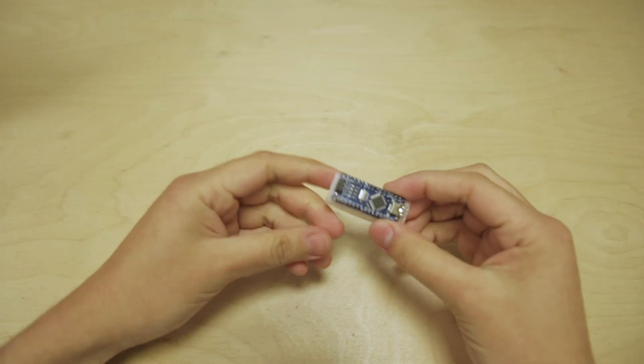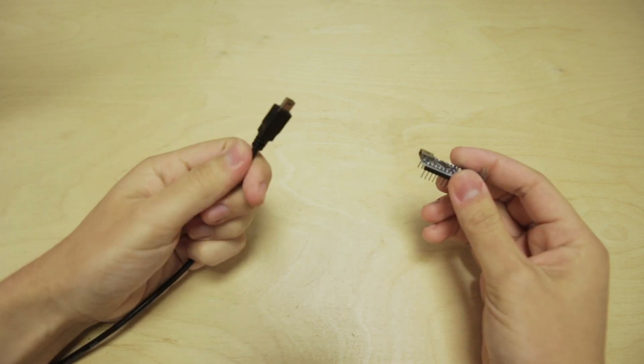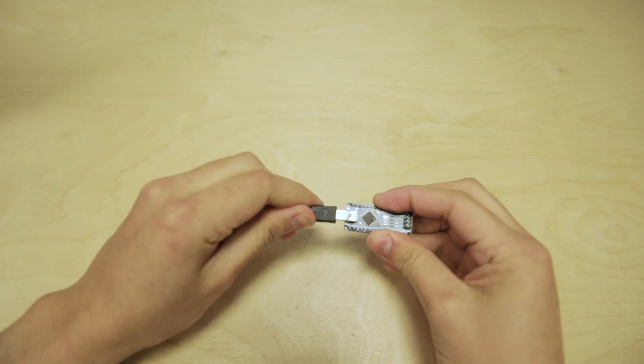The first step is to take your microcontroller, remove this foam, get your USB cable, and plug it into the USB port on the controller.